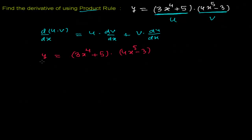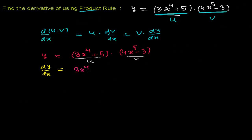Now I'm going to differentiate both sides with respect to x, so dy/dx equals — I'm going to write the first function as it is: (3x⁴ + 5), which is my u. Then times the derivative of the second function, d/dx of (4x⁵ - 3). That finishes my first part.